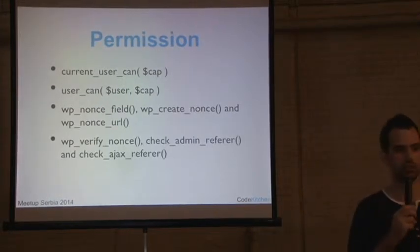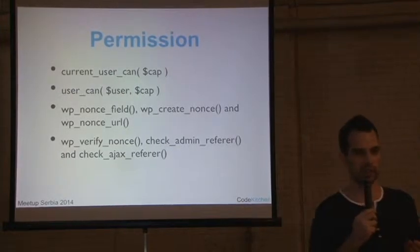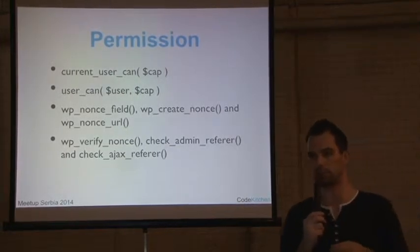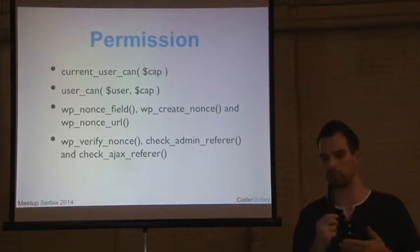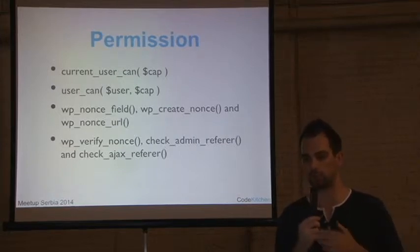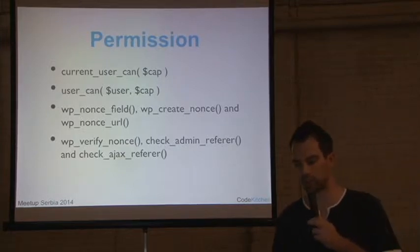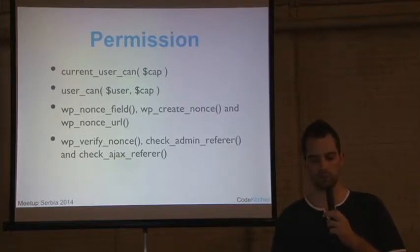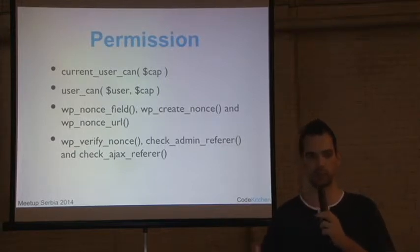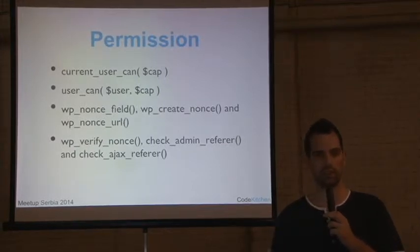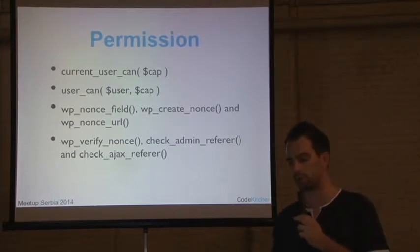For permissions, know what your user wants to do and what they're allowed to do. Use current_user_can() to check permissions. You can also use user_can() if you already have a user variable and it doesn't have to be the current user. Also know the intention of the user by using nonces — like wp_nonce_field() and wp_verify_nonce(). You want to be sure the user did the action themselves and not a script that just called the URL hoping it would work.